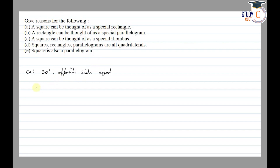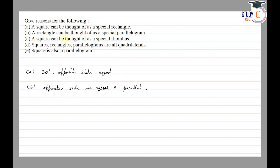Part b: A rectangle can be thought of as a special parallelogram. In a parallelogram, opposite sides are equal and parallel. In a rectangle, opposite sides are also equal and parallel, but additionally all interior angles are 90 degrees. So a rectangle is a special parallelogram in which all interior angles are 90 degrees.